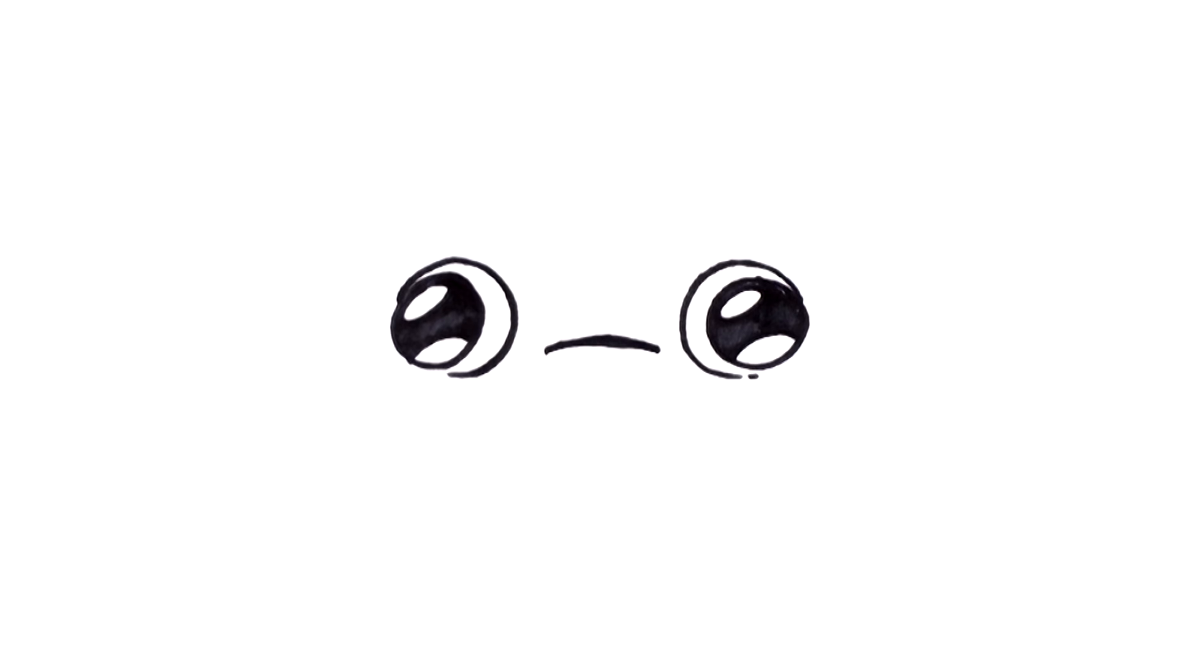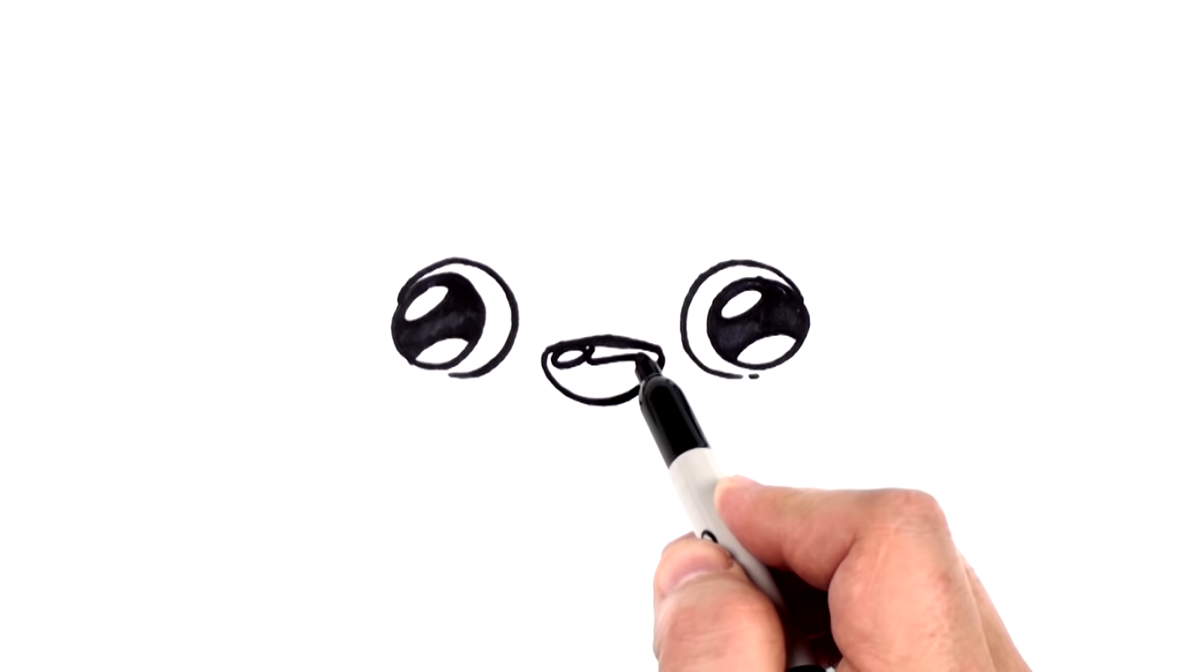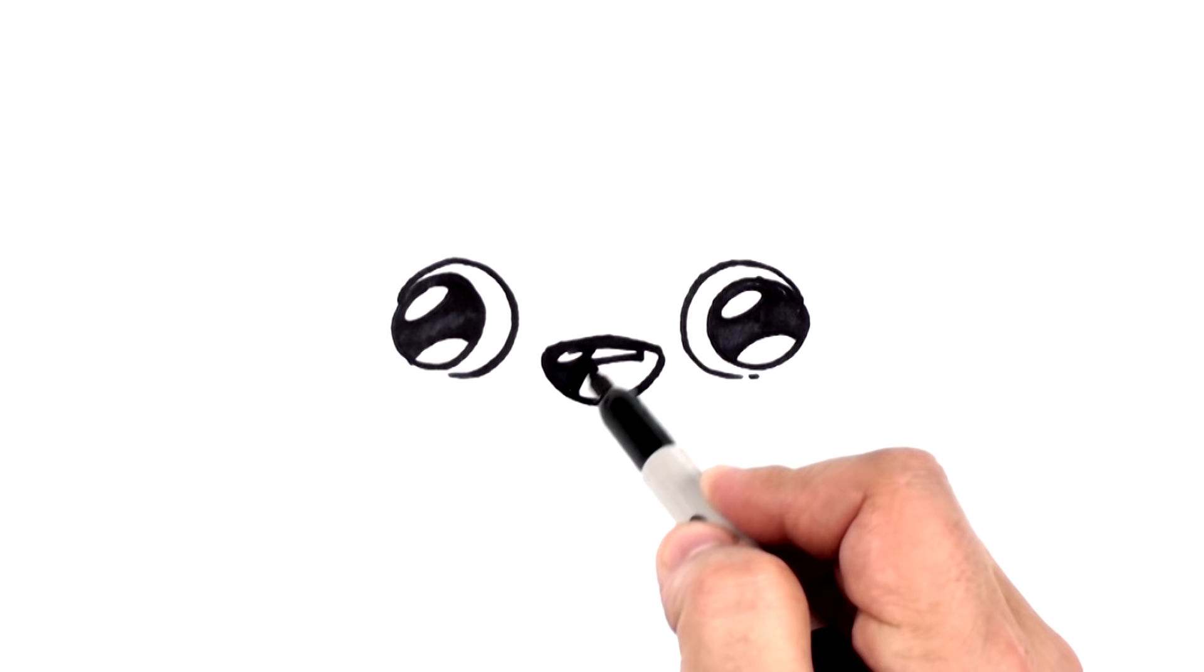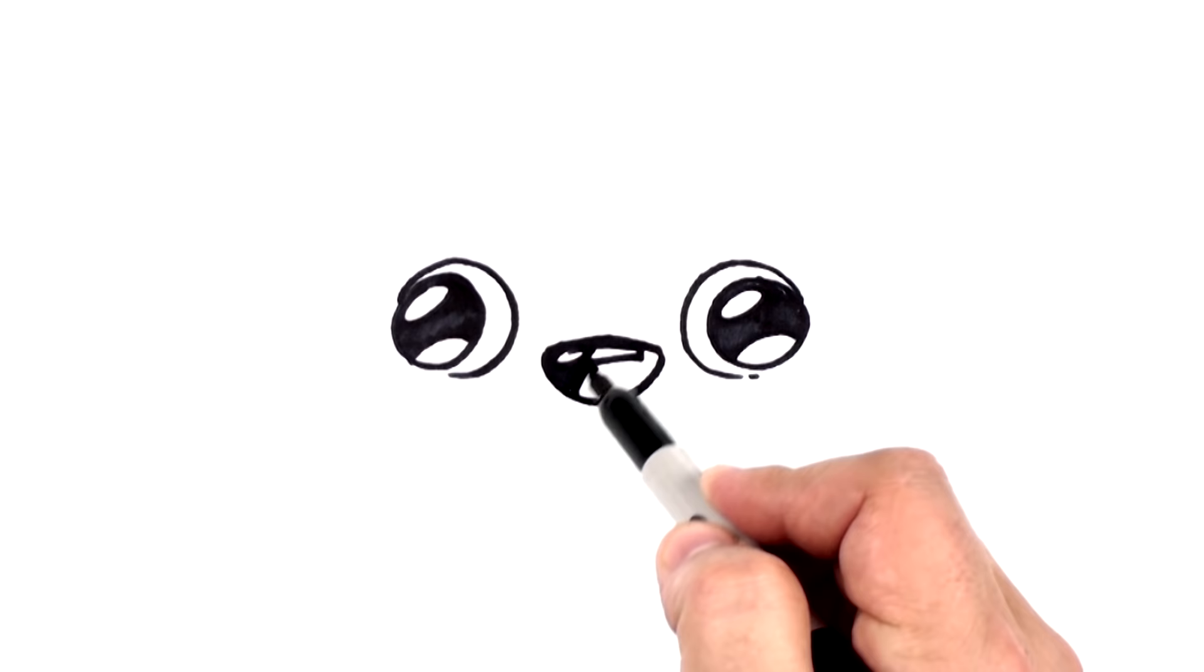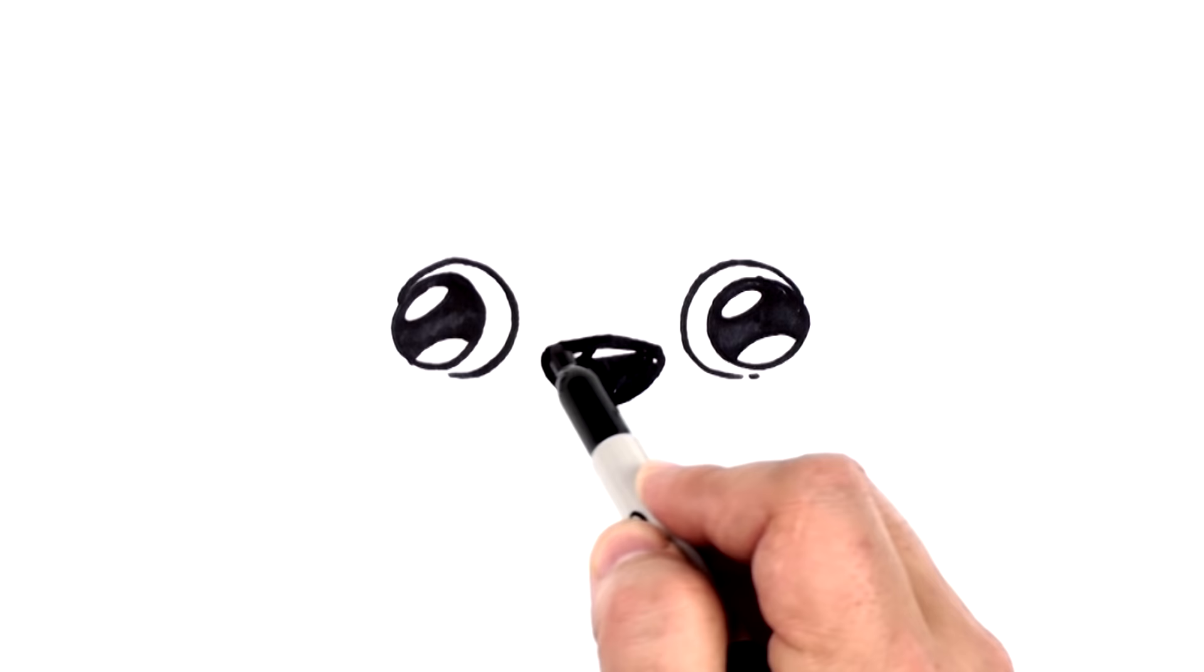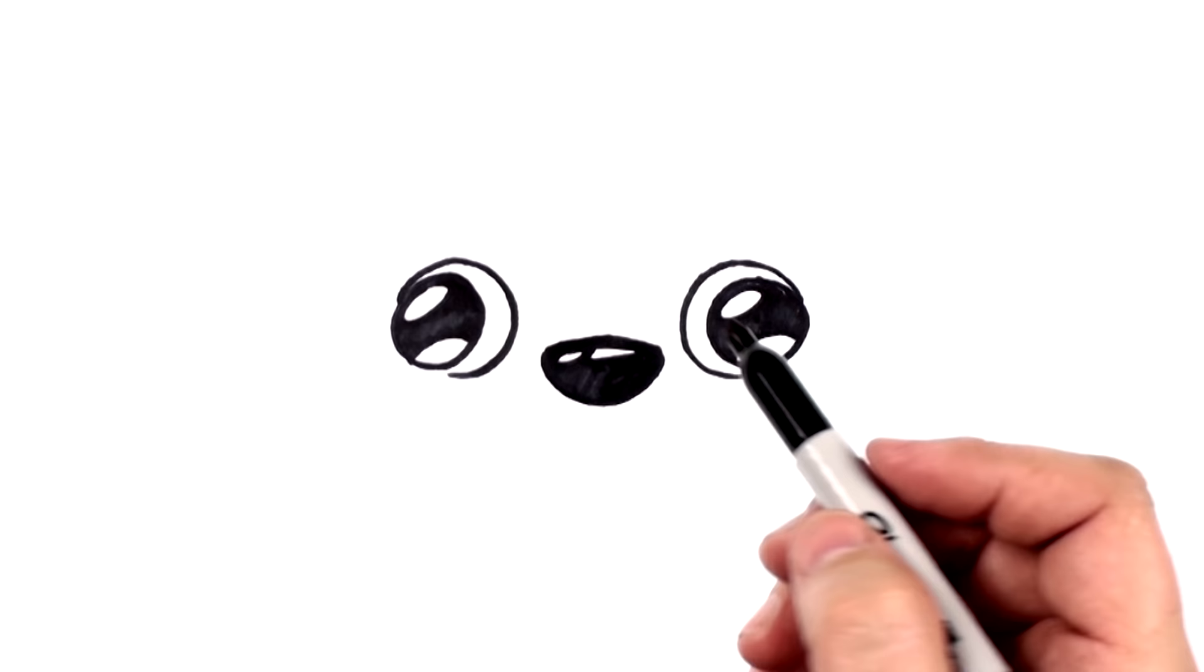And then we're going to draw a nice little curve below there like that. And here again, let's put a highlight or two. Let's put two little highlights in there, and we'll go ahead and color that in. We can always fill those highlights in if we don't like them, but it's hard to put them in once you've colored it all black.